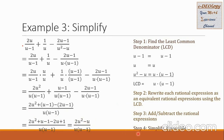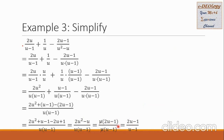Step 4: simplify if possible. In the numerator 2u² − u, we observe a common factor of u, so we factor it out as u(2u − 1). The u in the numerator cancels with the u in the denominator u(u − 1). After cancellation, we collect the remaining terms: the result is (2u − 1) over (u − 1).